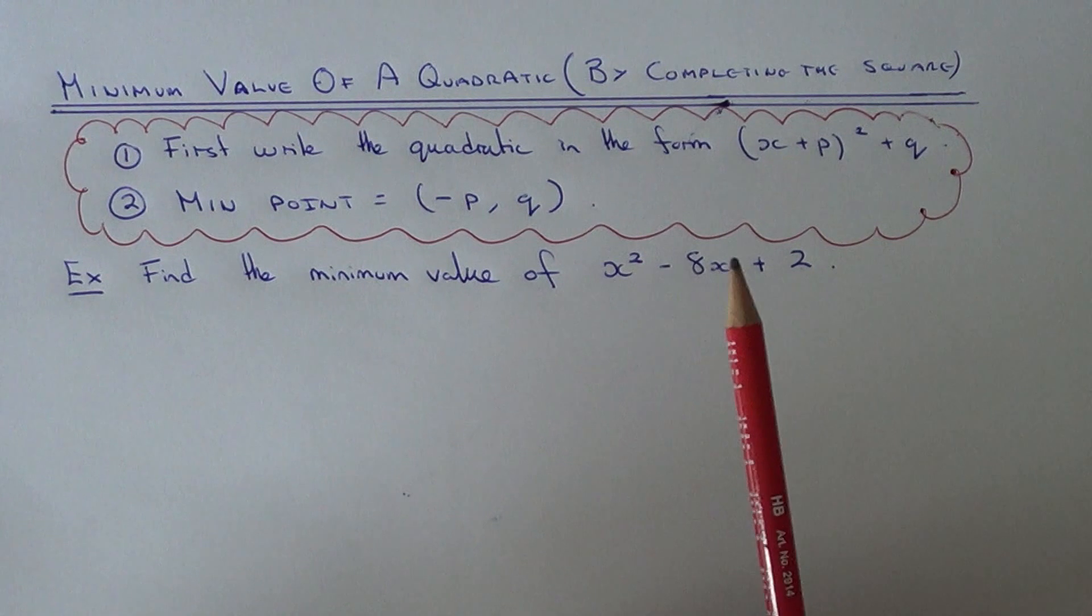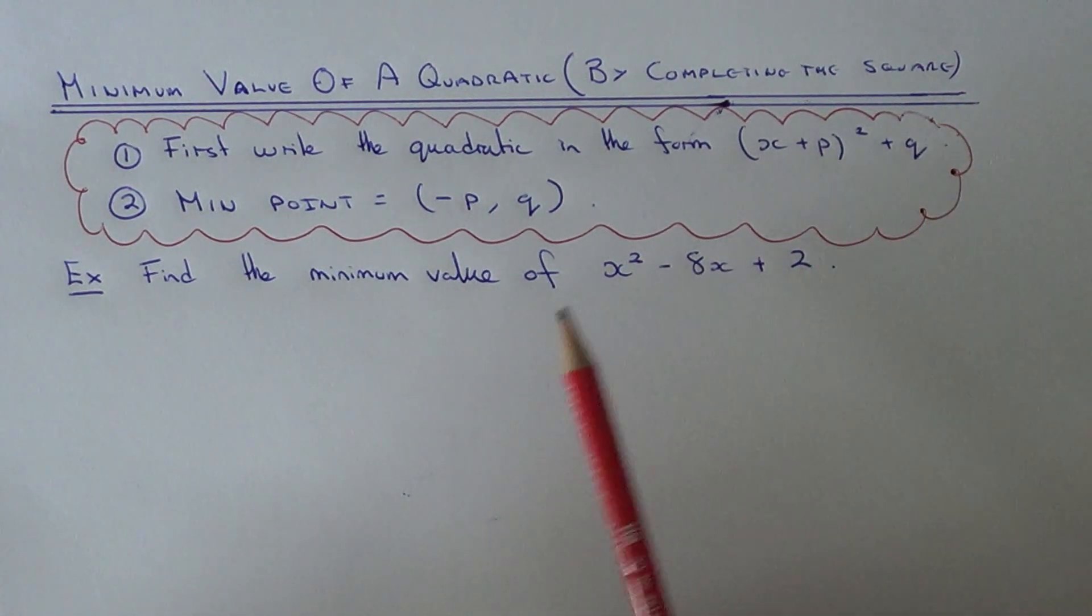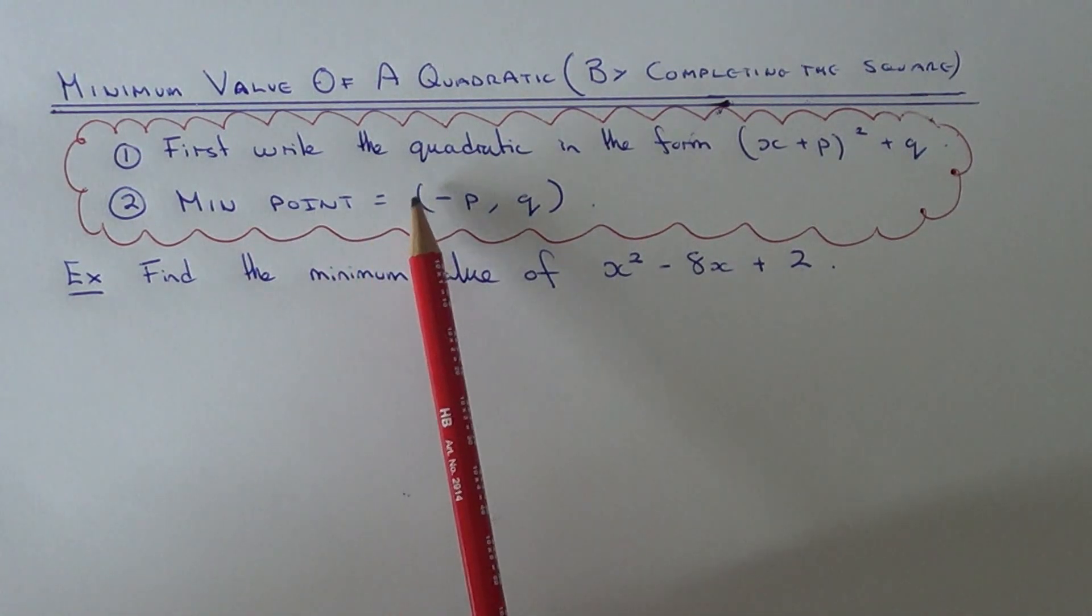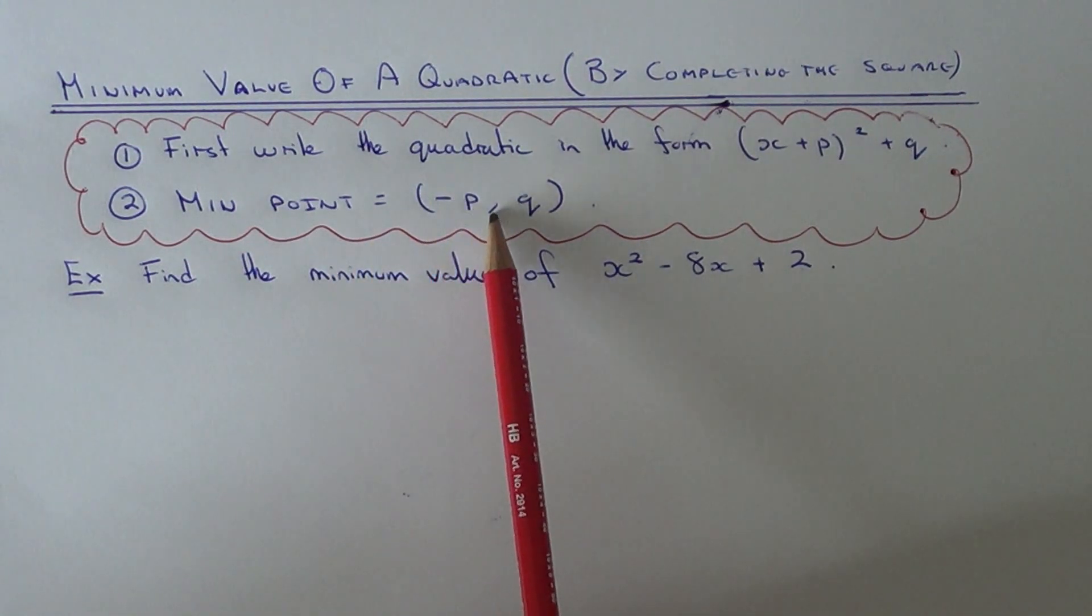Once it's in completed square form all you need to know are the values of p and q and the minimum point will occur at minus p comma q.